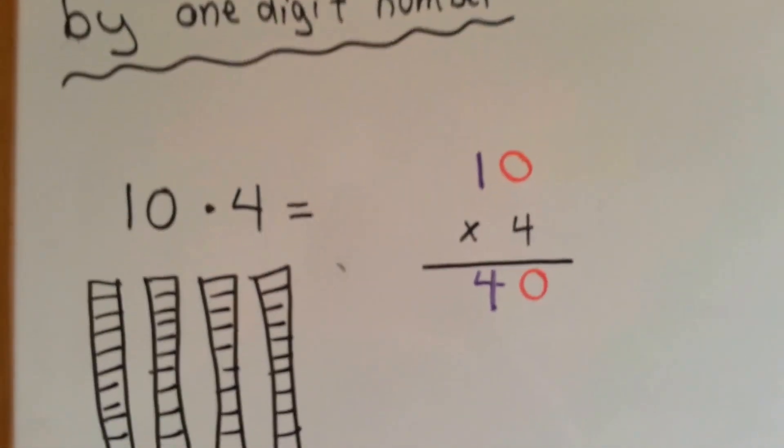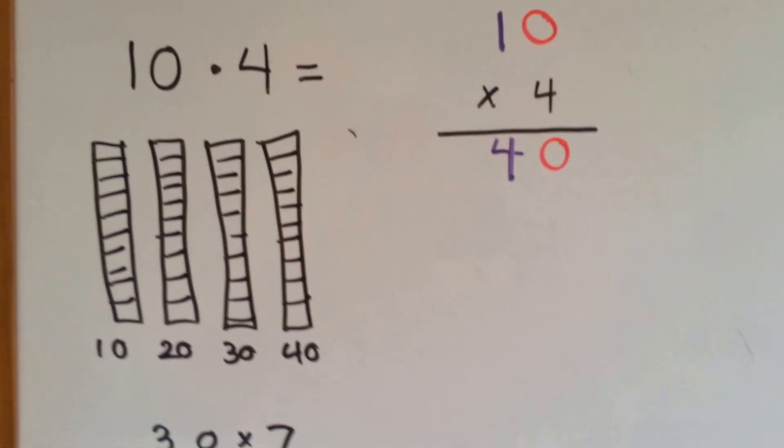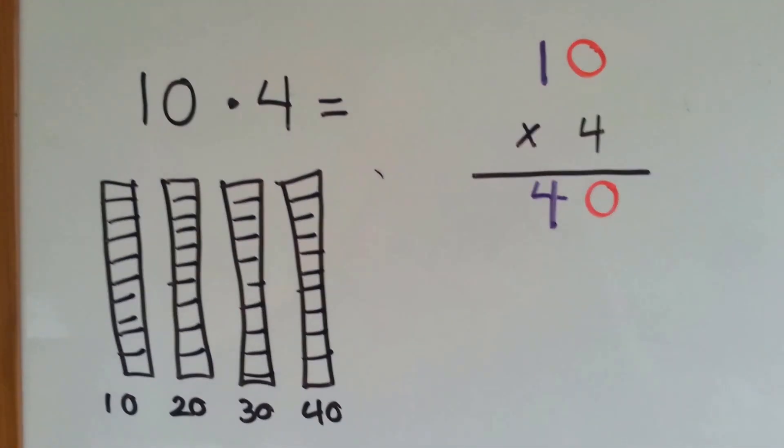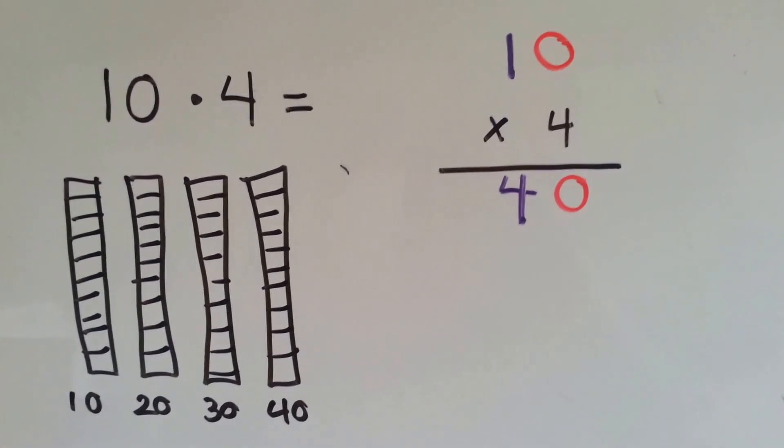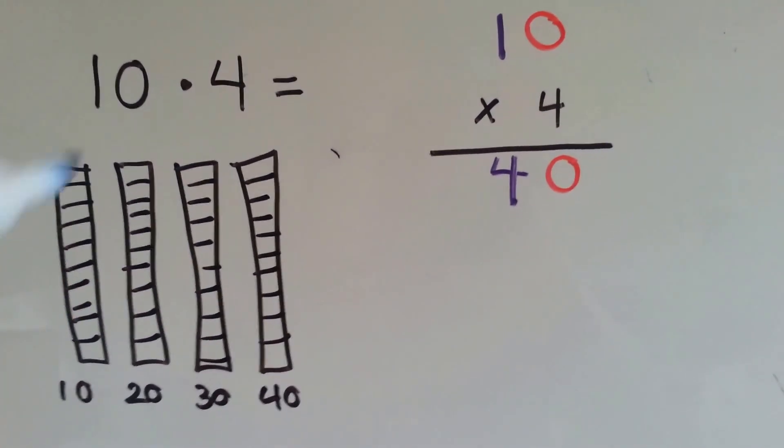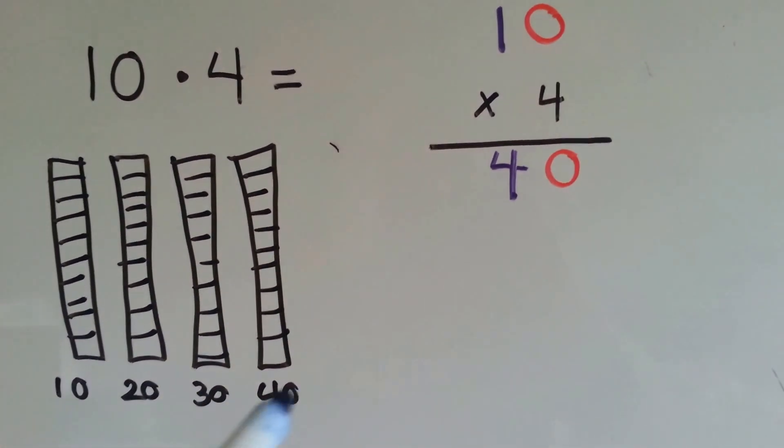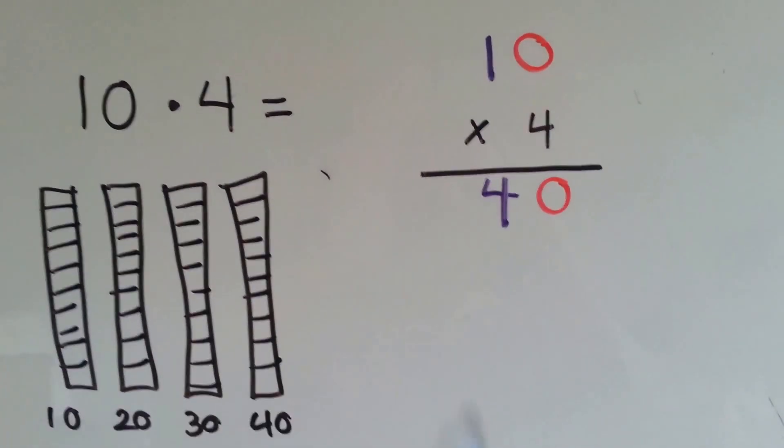So the first thing we're going to look at is this one. We have 10 times 4. That means we're going to have 4 tens: 10, 20, 30, 40. 10 times 4 is 40.